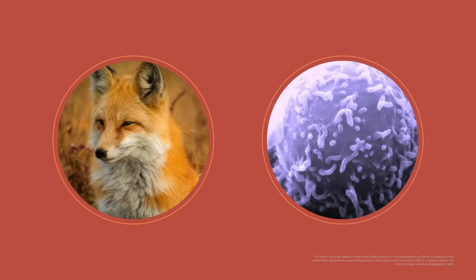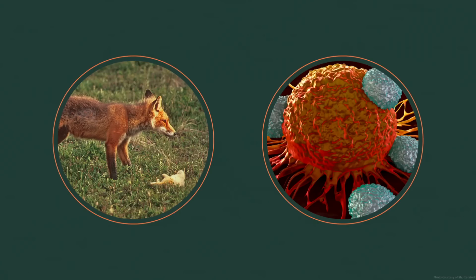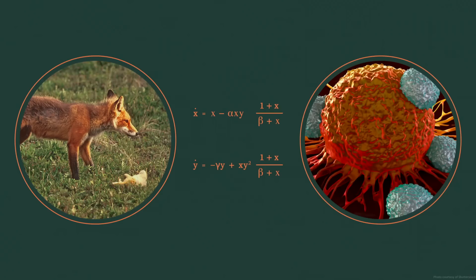Let me give you an example. What do foxes and immune cells have in common? They're both predators, except foxes feed on rabbits and immune cells feed on invaders, such as cancer cells. But from a mathematical point of view, a qualitatively same system of predator-prey type equations will describe interactions between foxes and rabbits and cancer and immune cells.